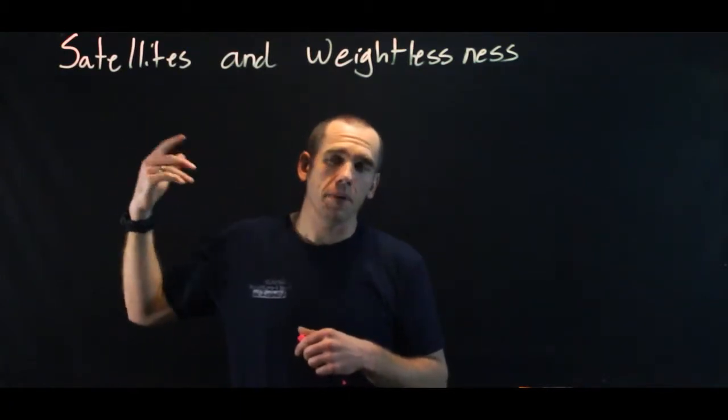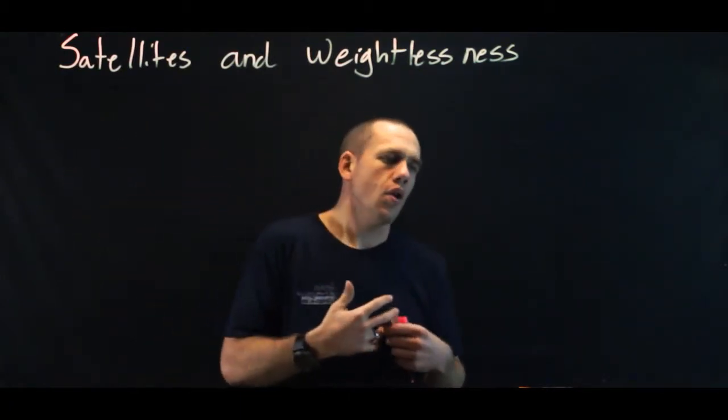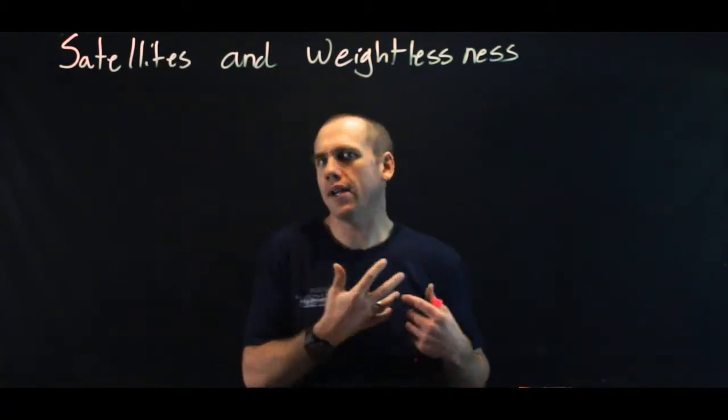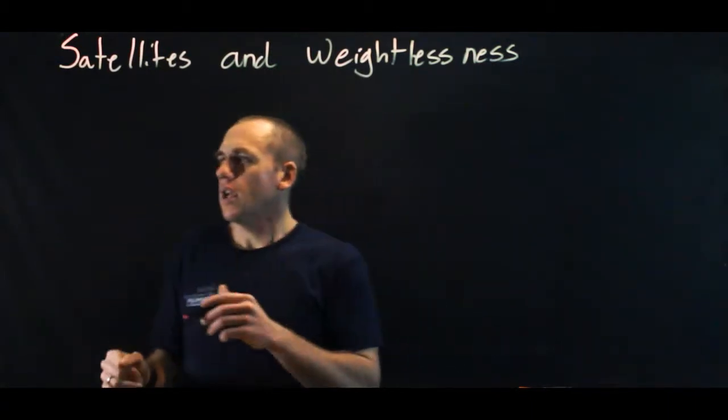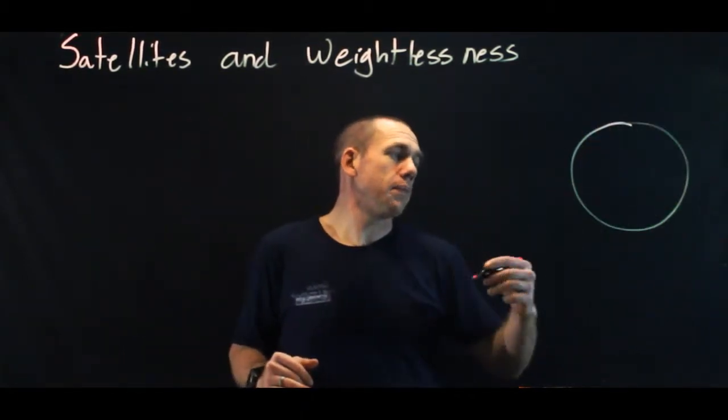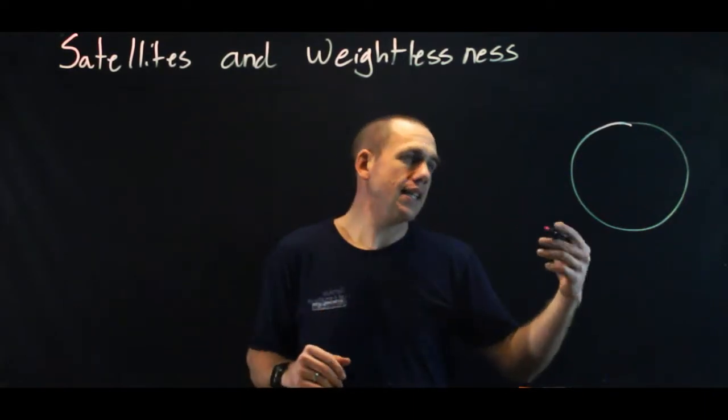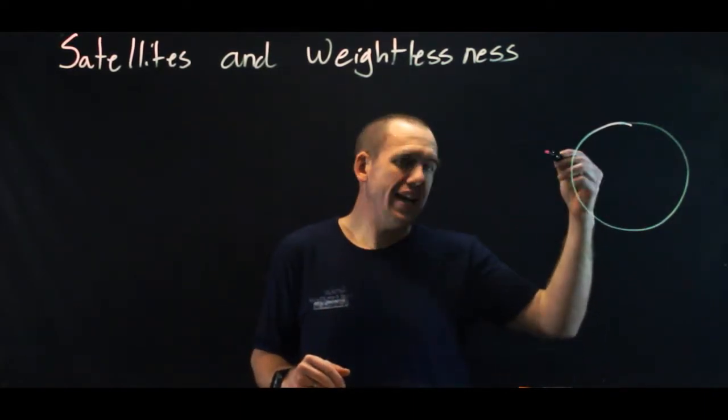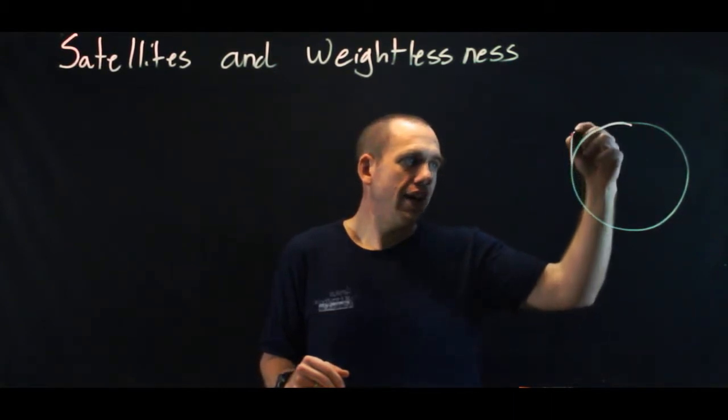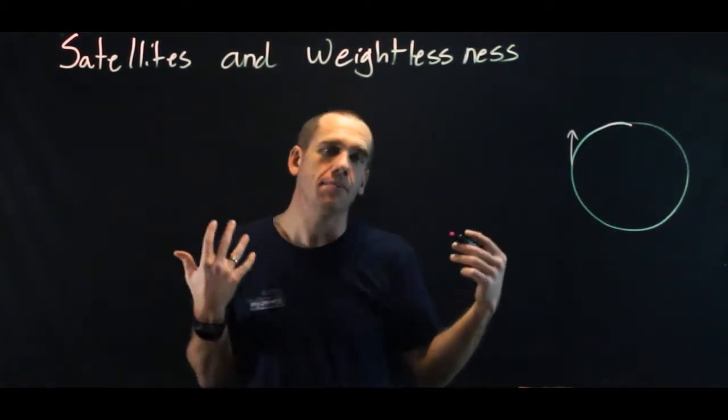So satellites are up there orbiting Earth, and the question is what keeps the satellite up? How come it doesn't fall back down and why doesn't it just leave? So to answer that question, let's consider a model of the Earth. When we launch a satellite into space, we launch it at a tangential velocity. How come it doesn't keep going like that?